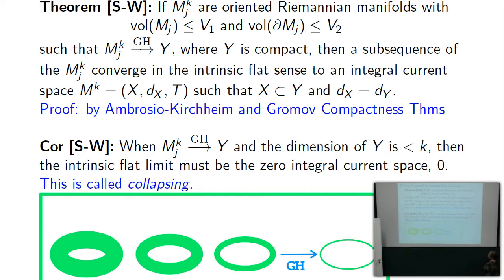A corollary: if Y collapsed and was lower dimensional, the intrinsic flat limit must be zero because it has to be the same dimension but fits in a lower dimensional space — that's called collapsing. The sequence of tori converging to a circle is collapsing and the intrinsic flat limit is zero. You can also see this directly: for the tori, their volume is going to zero, which is enough to make the intrinsic flat limit zero.